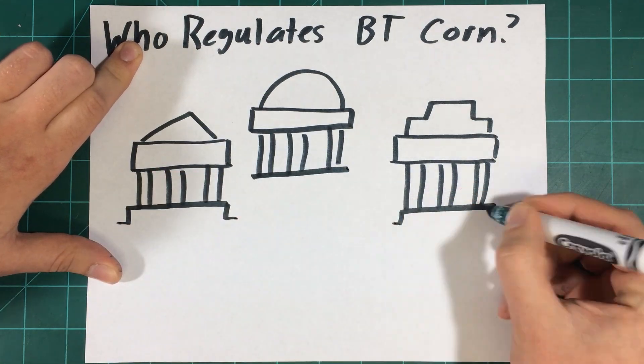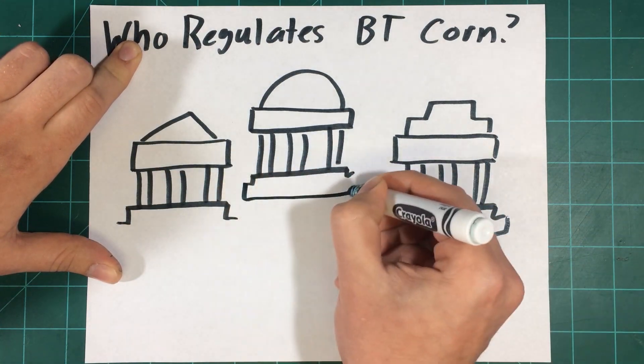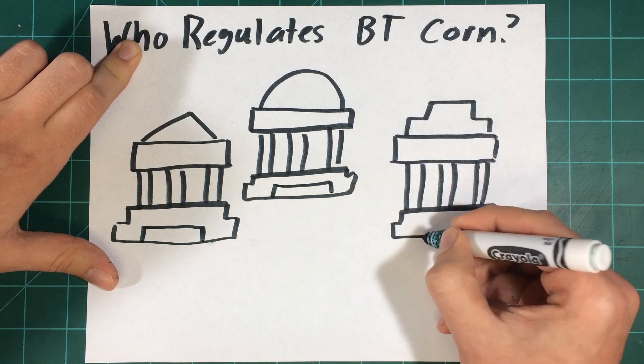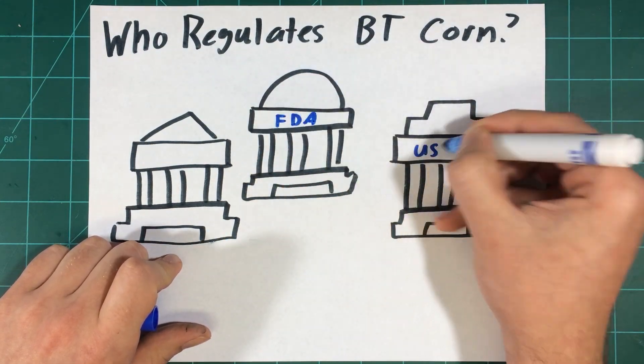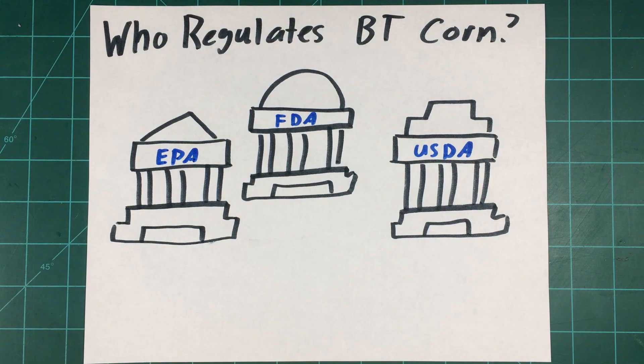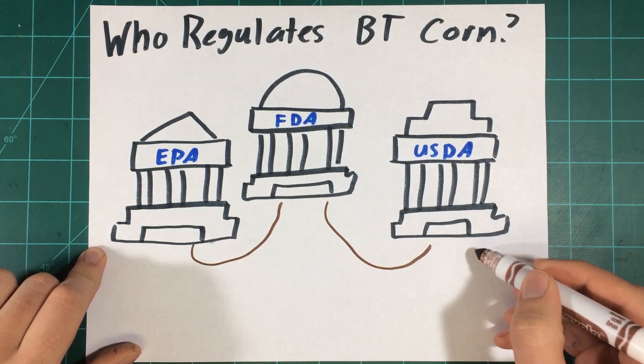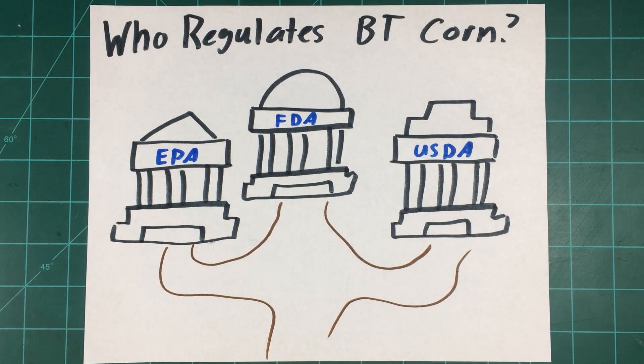These three agencies are the Environmental Protection Agency, the EPA, the U.S. Food and Drug Administration, the FDA, and the United States Department of Agriculture Animal Plant Health and Inspection Services, USDA APHIS. But what role does each agency fill when it comes to ensuring the safety of BT corn and other GMO products?